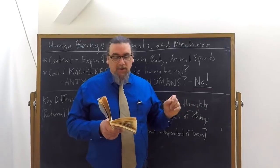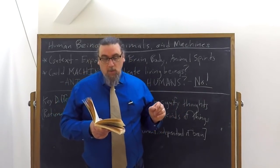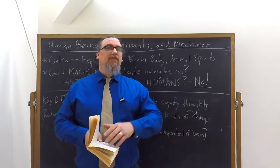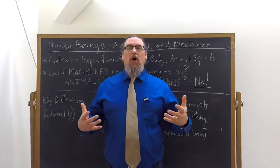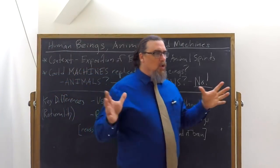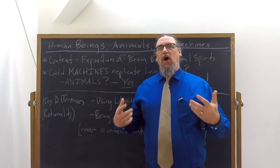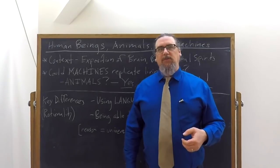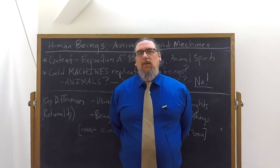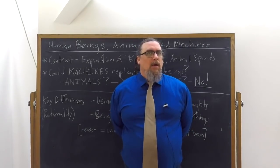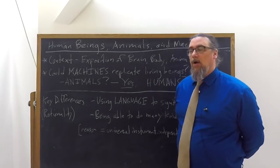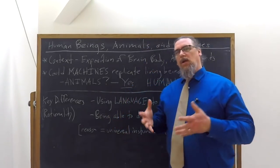So he says, it's not conceivable that the machine would put these words into different orders to correspond to the meaning of things set in its presence. And this is something that we notice, even Descartes says, the most dull-witted person can do. So there's a sense in which language isn't just about having a code where things mean things. It's also about a productive capacity to use language to say something new. That's very important.